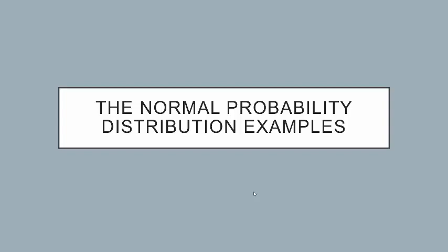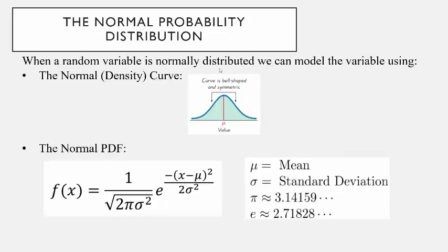Hi class. I wanted to follow up the previous example by doing a few more problems of the normal probability distribution using the empirical rule. If you remember from the previous lecture, we saw that for a random variable that's normally distributed, we can model it using the normal density curve, which is this bell-shaped curve.